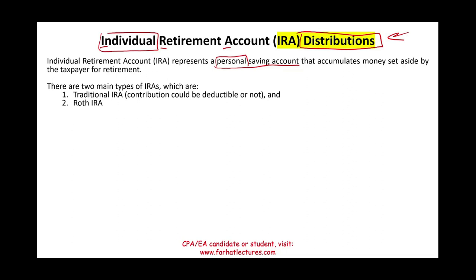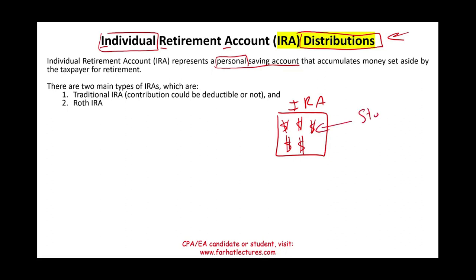An IRA is a personal investment account. Let's assume you open an IRA account for yourself and you're going to put money in that account every year, whatever is allowed. You're going to take that money and invest it in stocks, bonds, gold — whatever you want to invest in. You're just basically making investments.